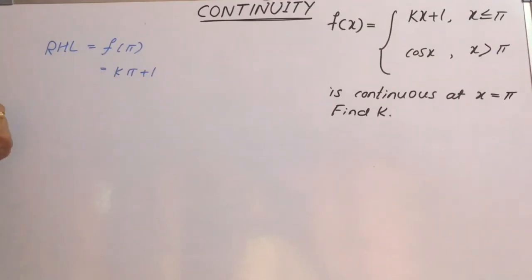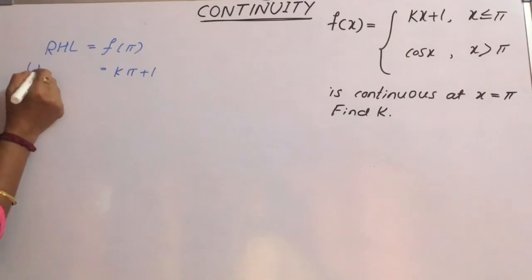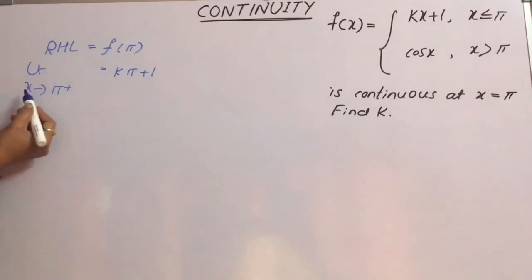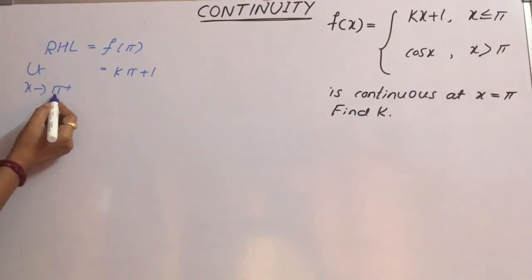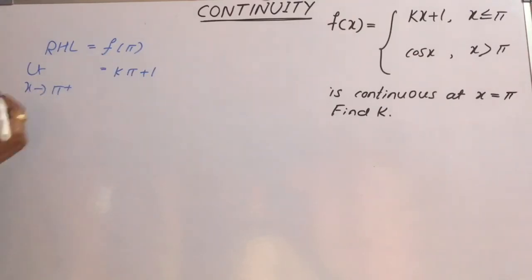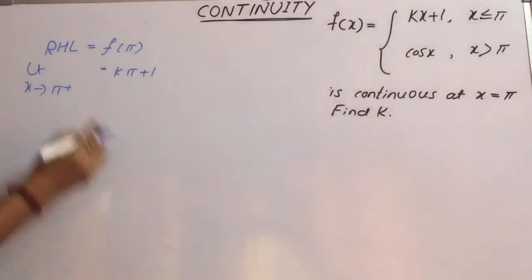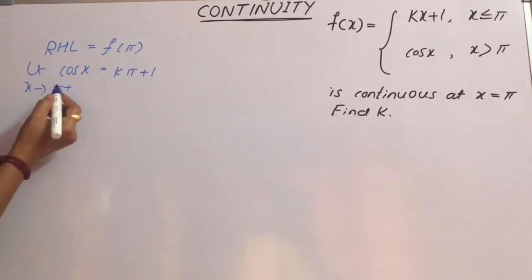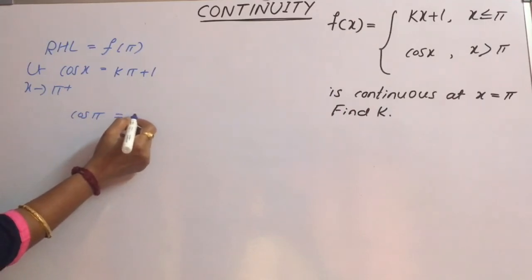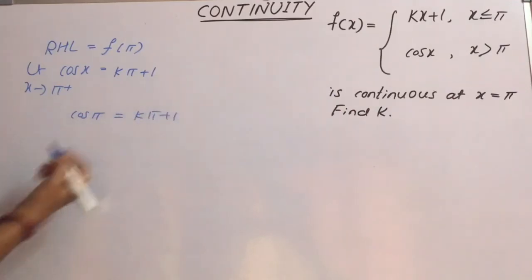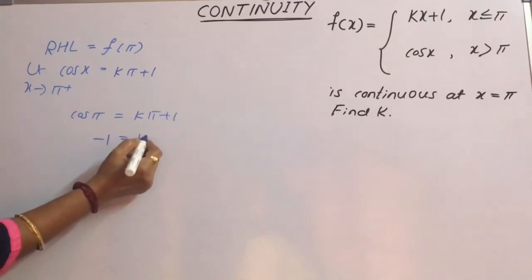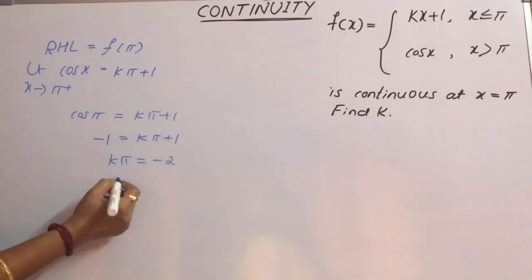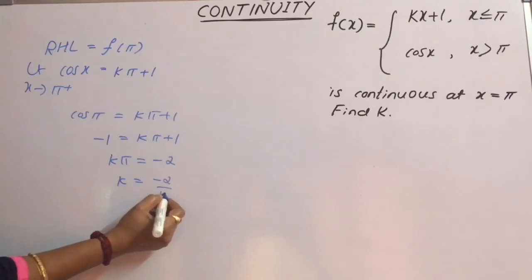The RHL means limit as x approaches π from the right (x > π), where the defined function is cos(x). Substituting x = π gives cos(π) = kπ + 1. Since cos(π) = -1, we get kπ + 1 = -1, so kπ = -2, and therefore k = -2/π.